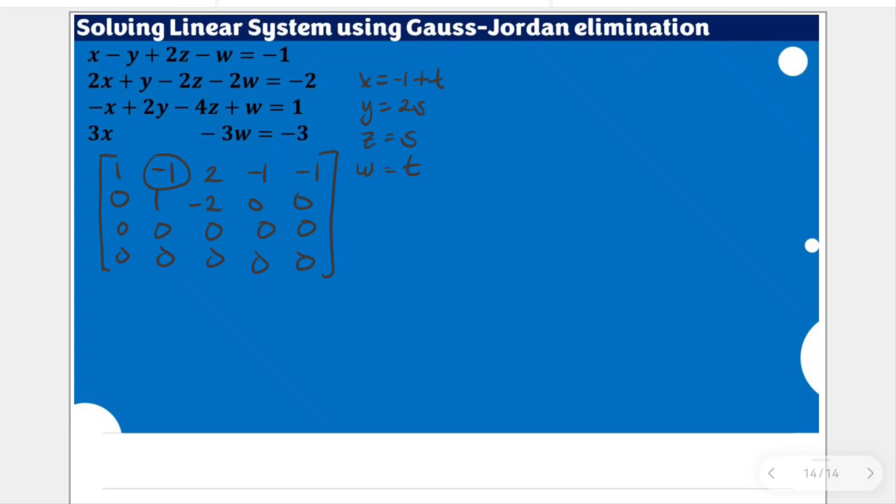And how do we do that? We will apply this row operation with the sum of row two and row one to become our new row one. As simple as that. So we'll have it here.